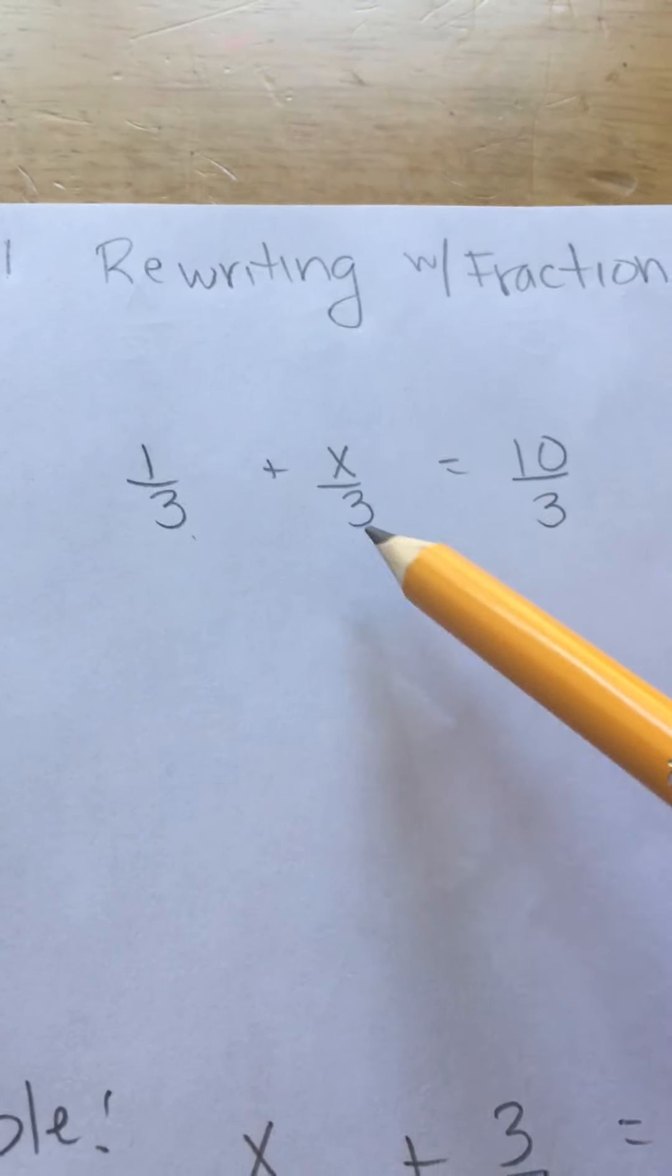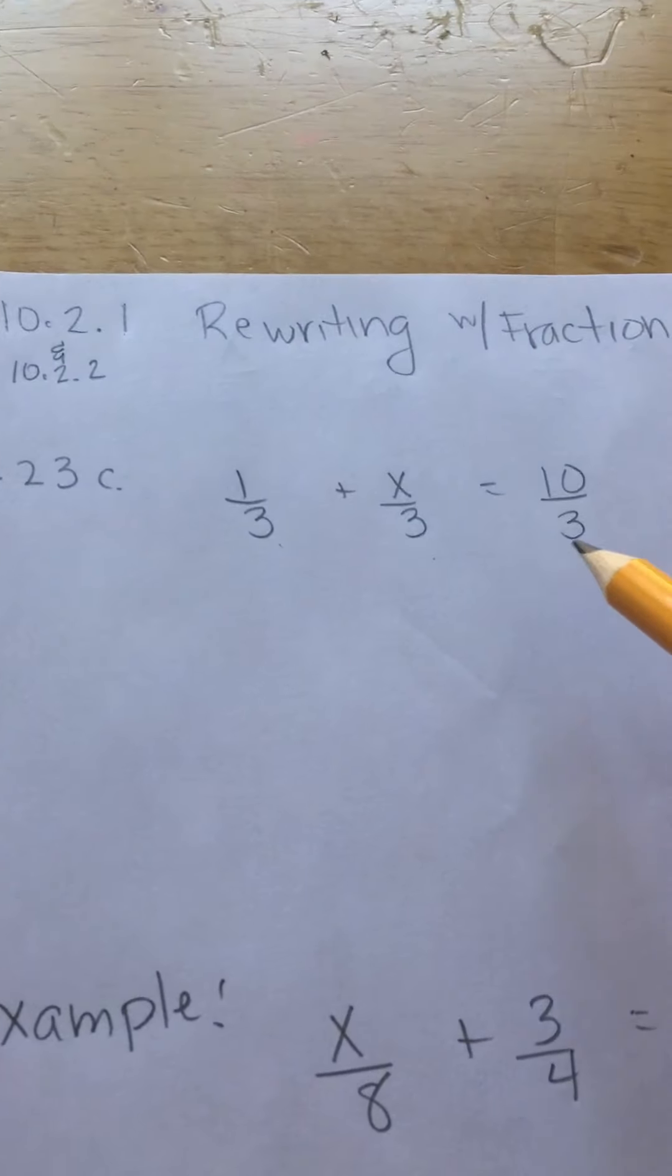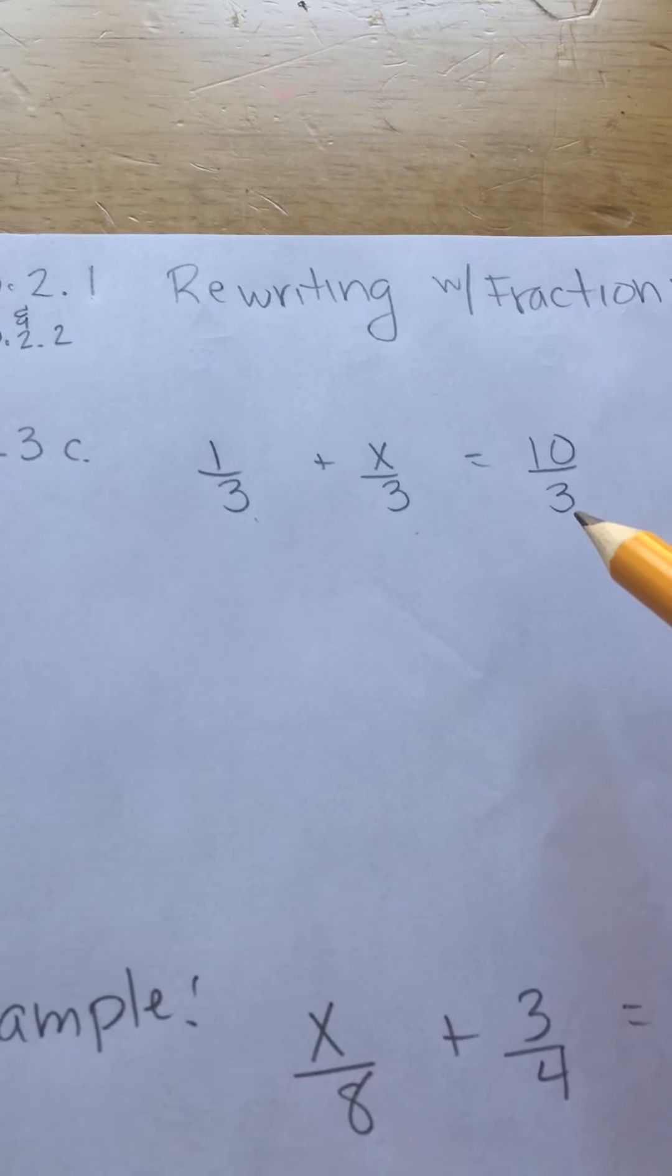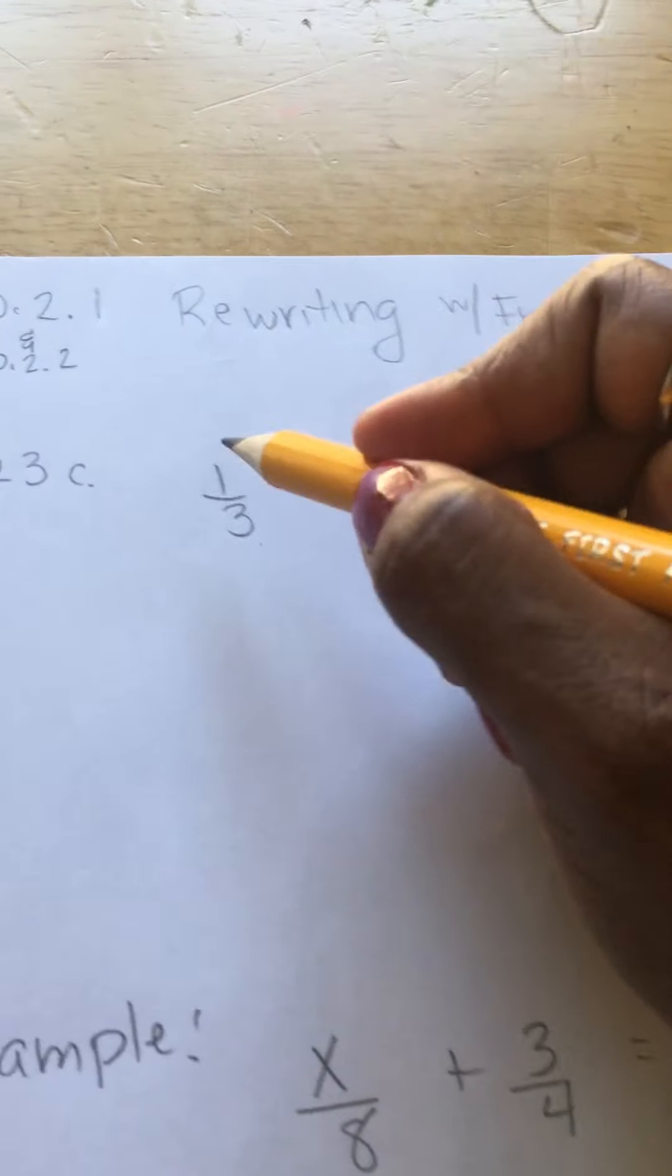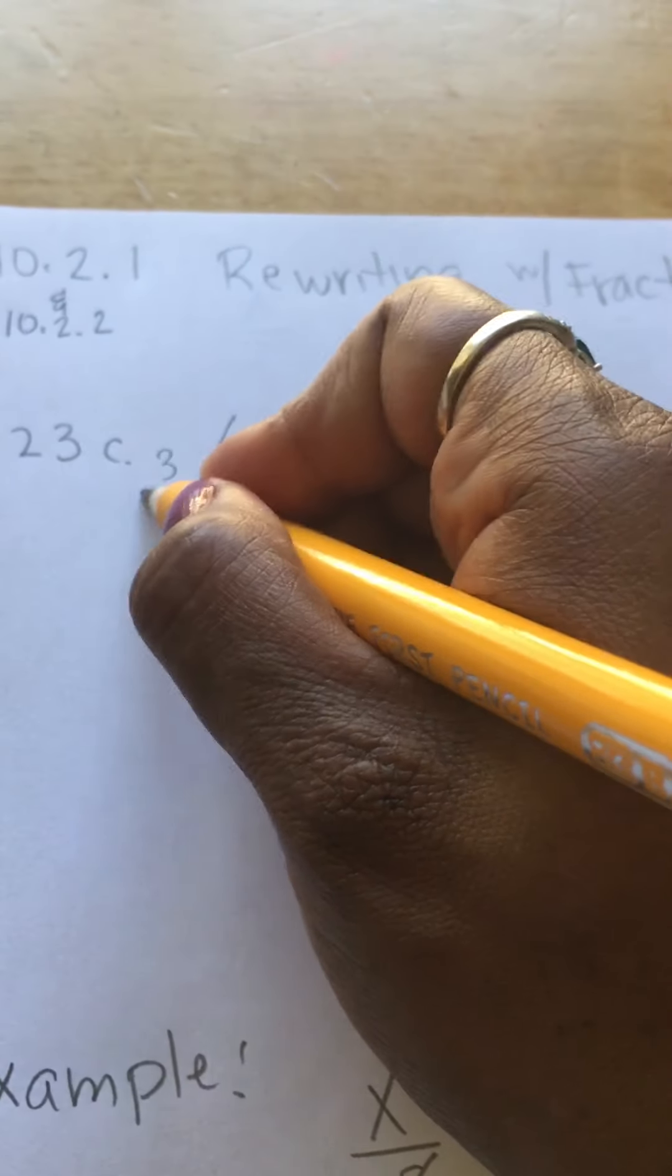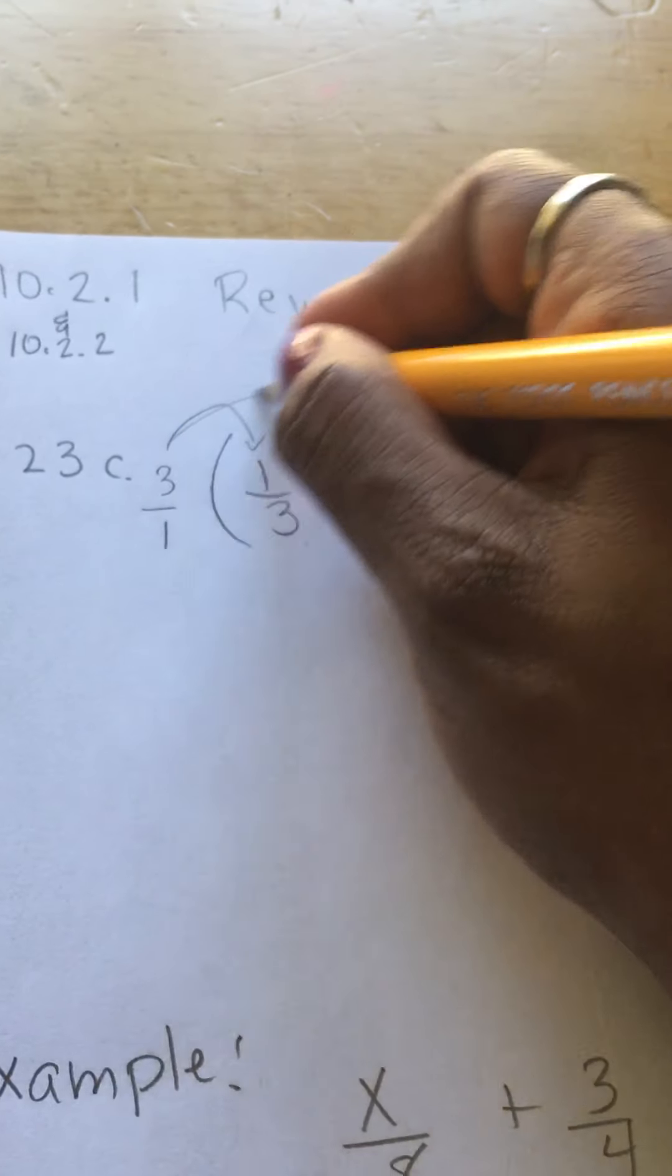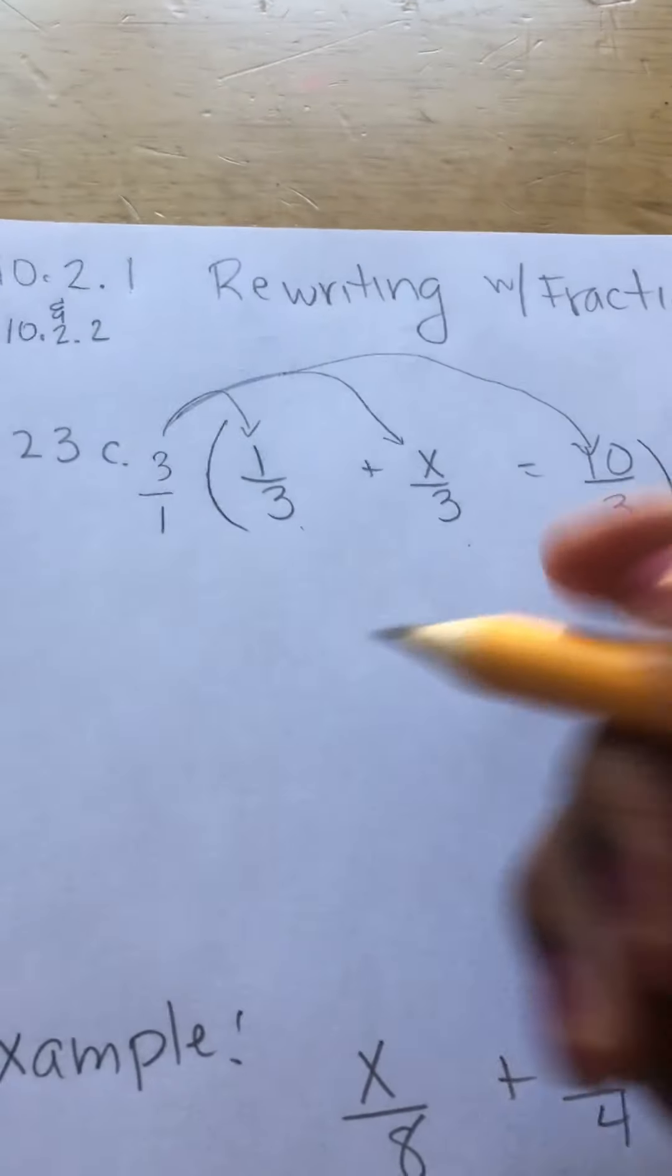This problem has 3 in the denominator for all three terms, so that's really nice. We want to get rid of it by doing the opposite of a fraction. The opposite of a fraction is multiplication. Let's multiply by 3 over 1. So 3 over 1 multiplies here, here, and there. I will rewrite this.